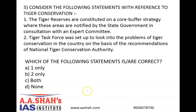The correct answer is D, none. The first statement is incorrect because core areas are notified by the state government in consultation with an expert committee. The core area is kept free of biotic disturbances and forestry operations, where collection of minor forest produce, grazing, and human disturbances are not allowed. This is also the area where tiger conservation projects draw criticism because, according to the Forest Rights Act of 2006, it recognizes the rights of some forest-dwelling communities in forest areas, and hence the project overlooks the role of abuse of power by authorities in the tiger crisis.